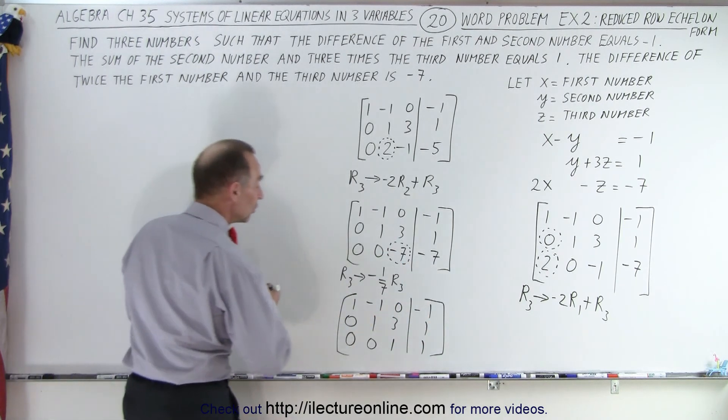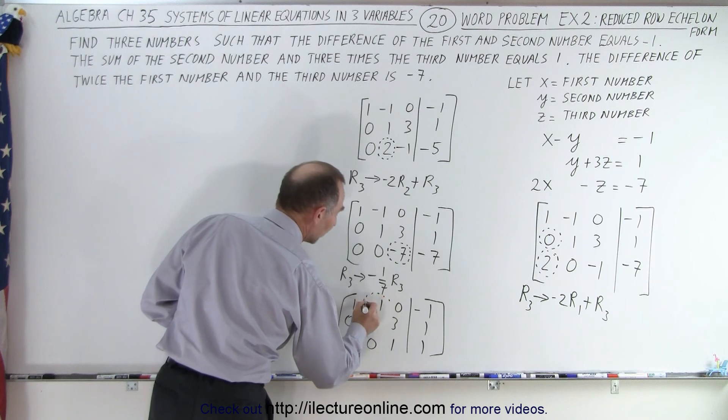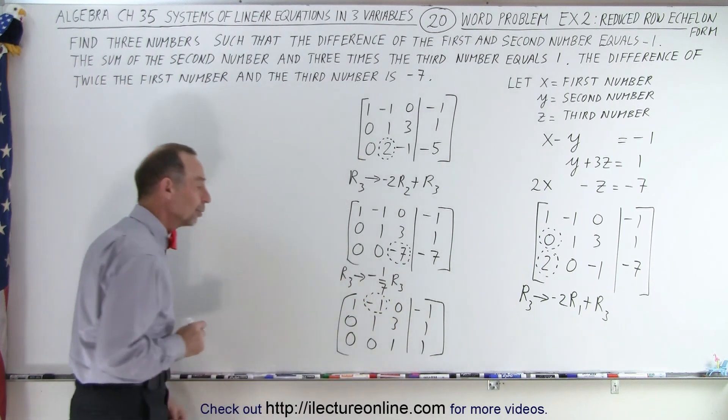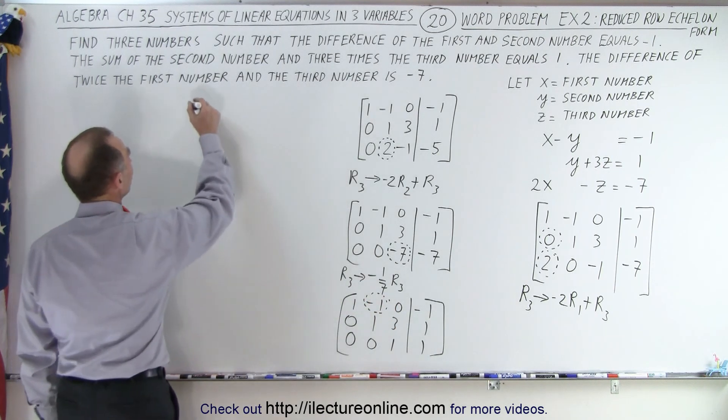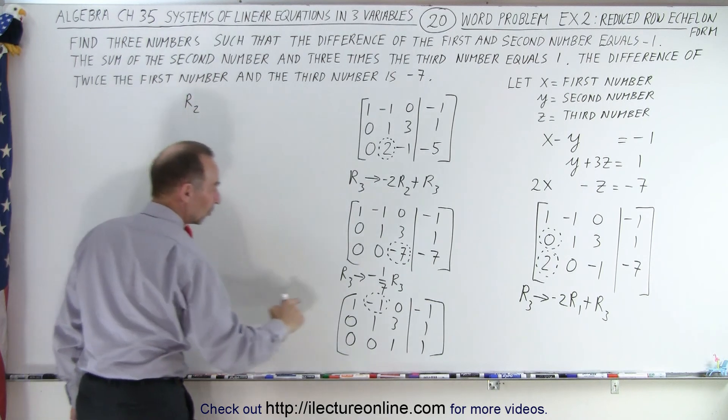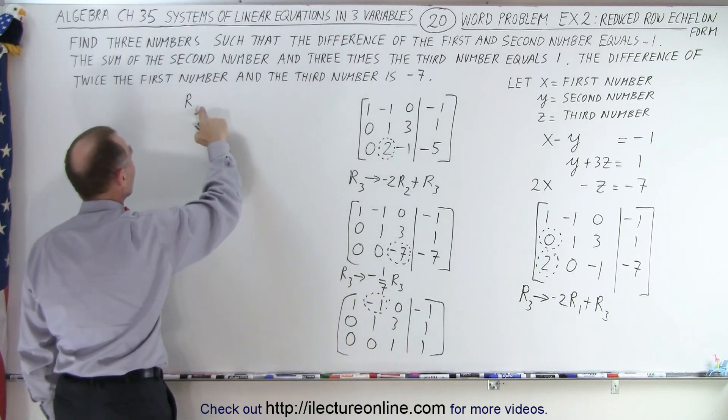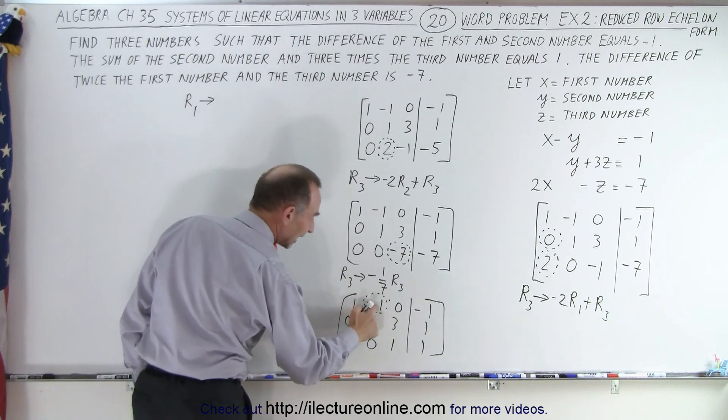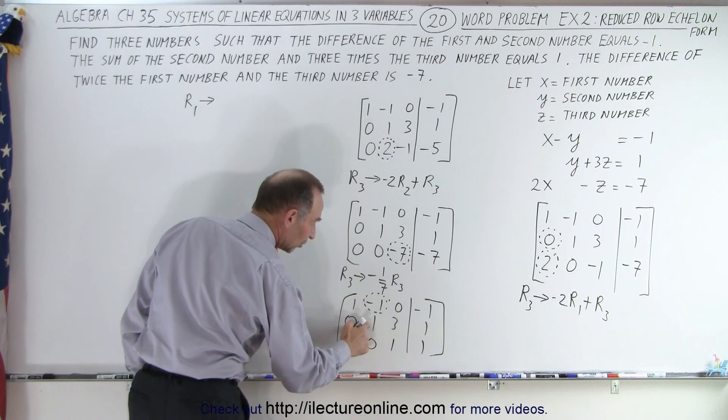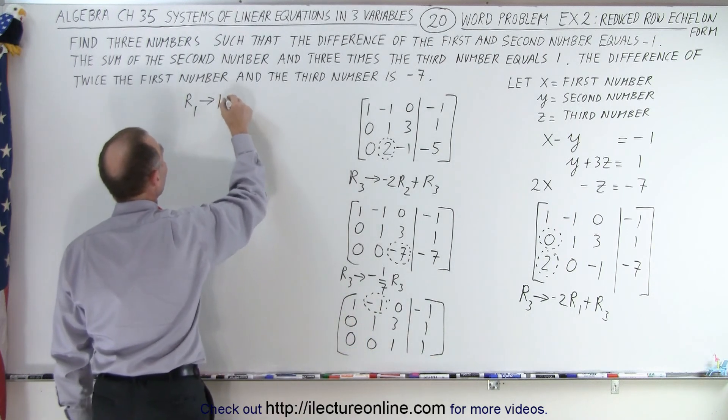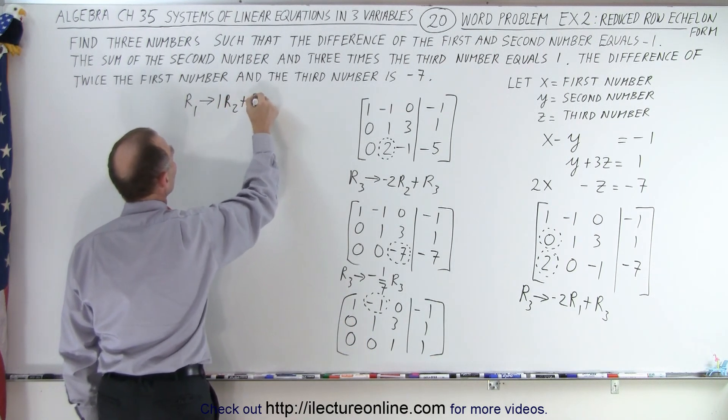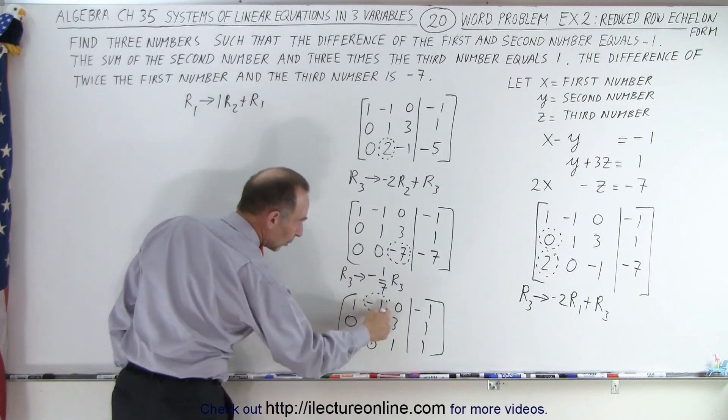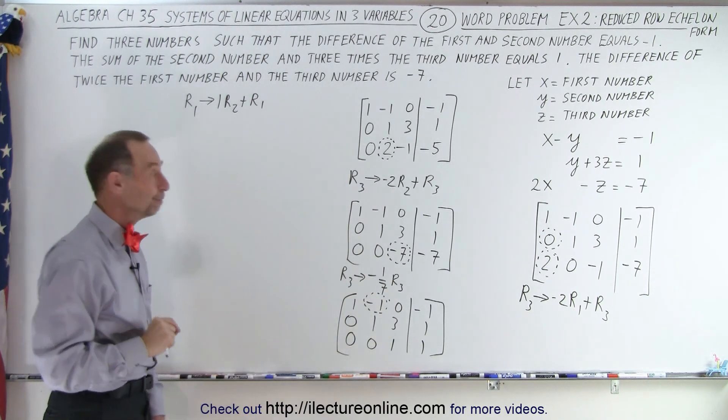So the next thing we want to do is to get rid of this right here and turn that into a zero. We're going to do that by taking the first row and replace it by the negative of this number, which is the positive one, times the row with the one in it, which is row two. So we get one times row two and add it to row one. When we do that, we'll turn that into a zero.